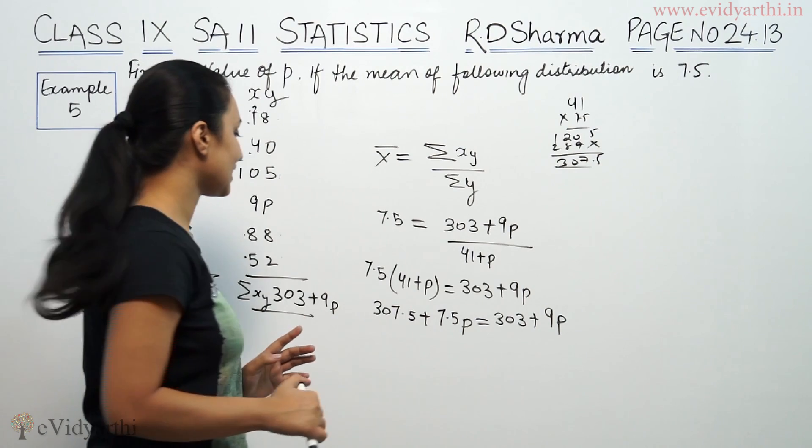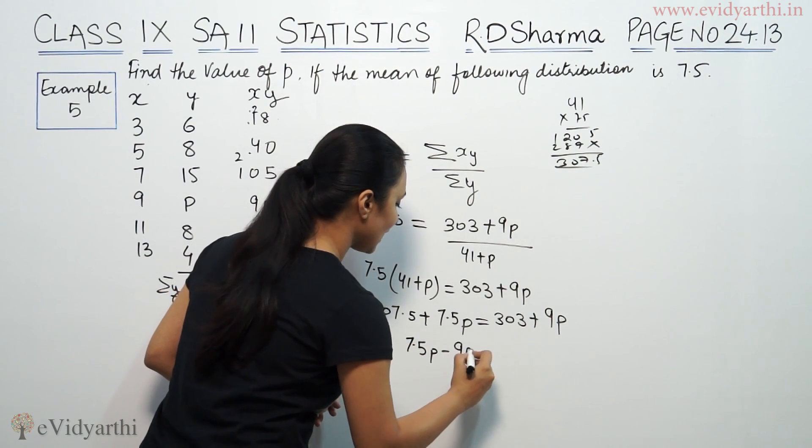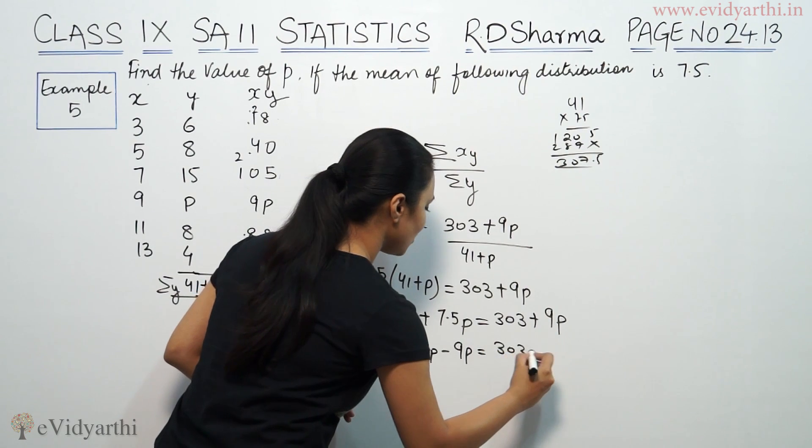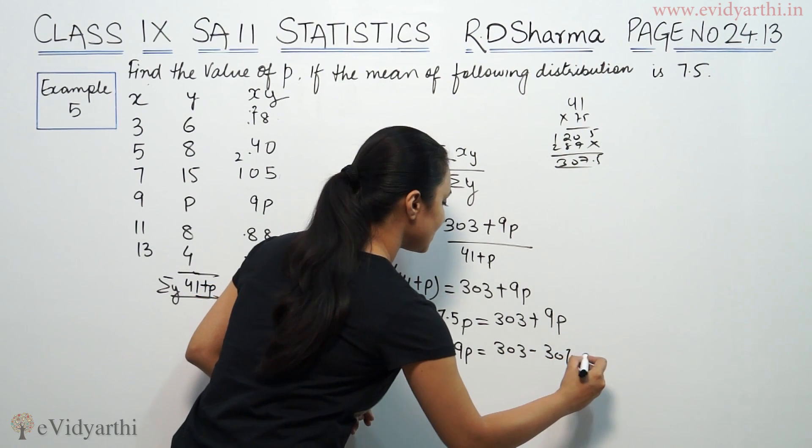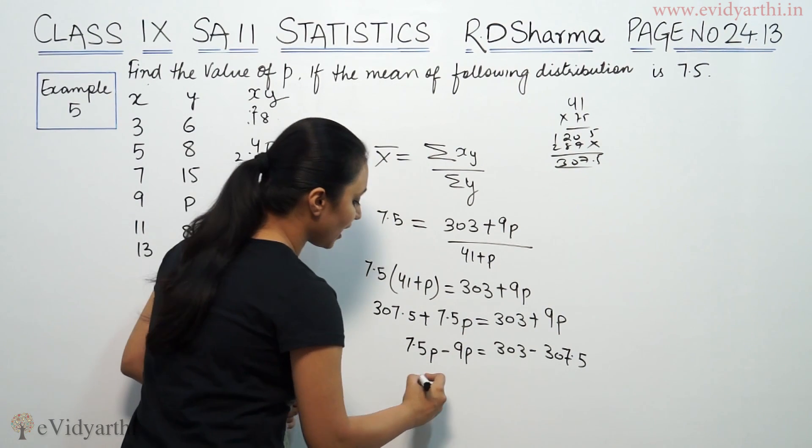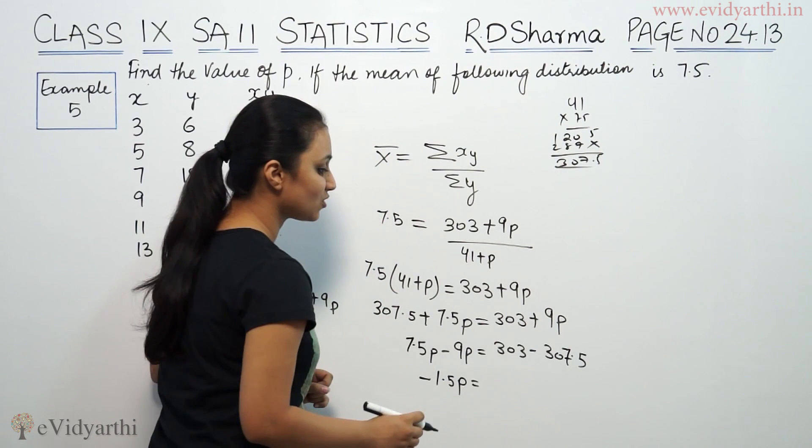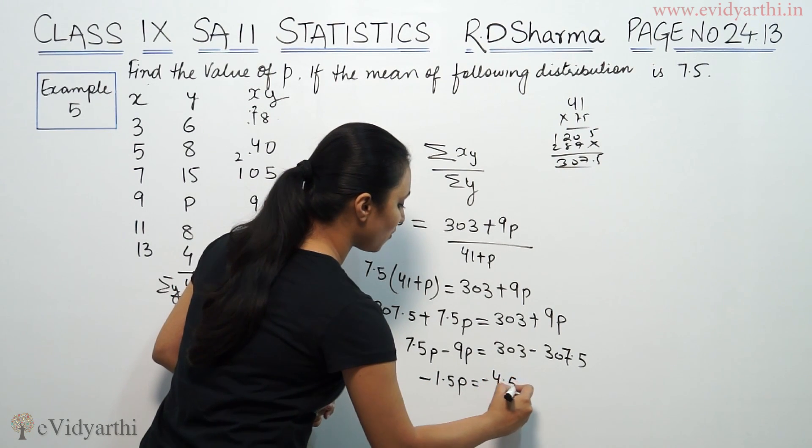P value terms on one side and constant terms on other side. So, this will be 7.5P minus 9P equals 303 minus 307.5. Subtracting these, we get minus 1.5P equals minus 4.5.